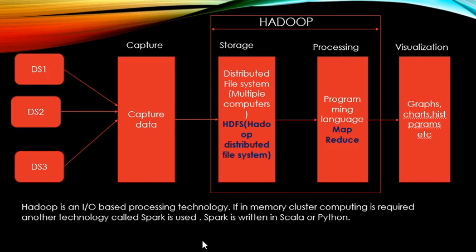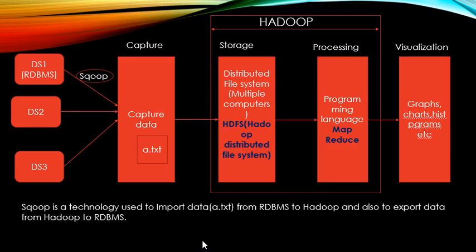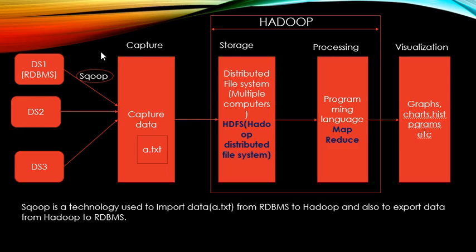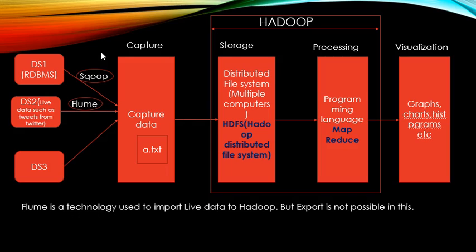Hadoop is an input/output based processing technology. If you want to use in-memory cluster computing, another technology called Spark is used. Spark is written in Scala and Python. Sqoop is a technology used to import data from RDBMS to Hadoop and also to export data from Hadoop to RDBMS.